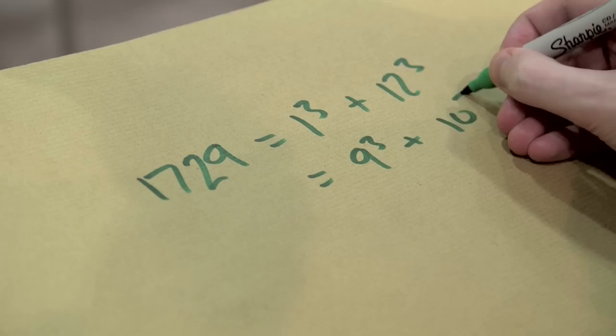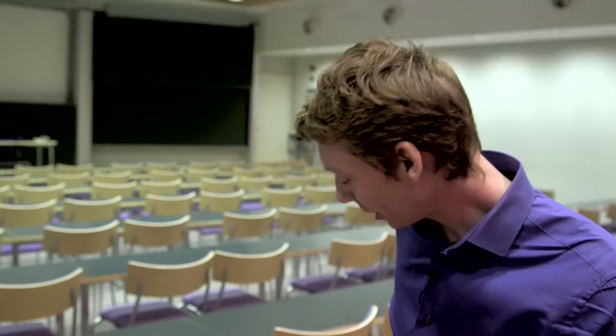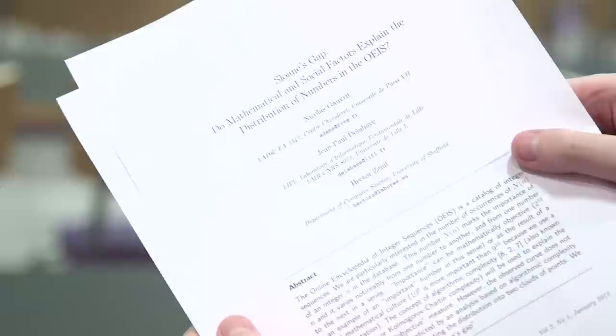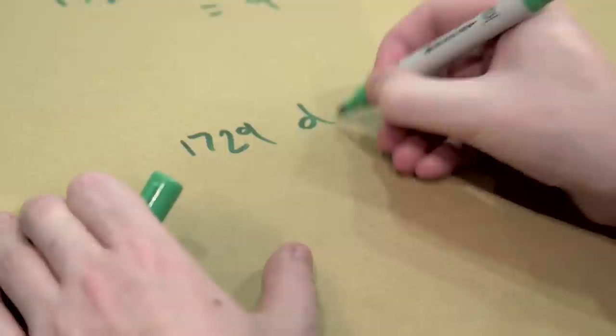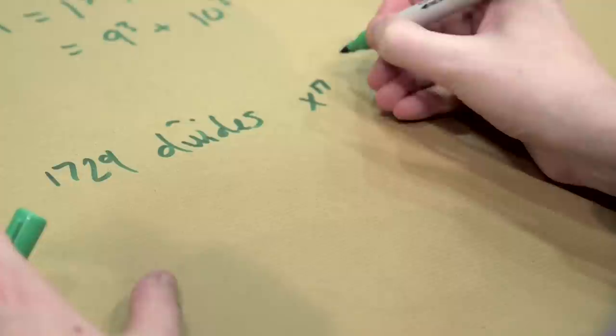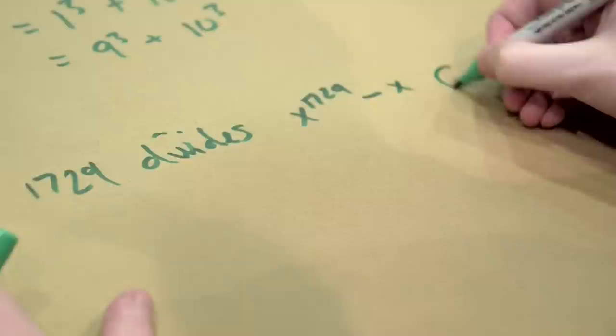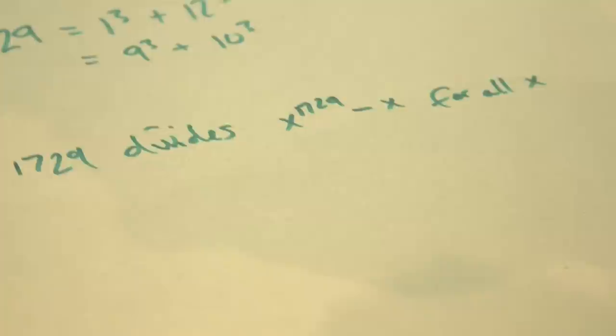There are other interesting things about 1729 — that's not the only interesting thing about it. It actually turns up in other sequences. This is the paper I'm going to refer to, and it gives 1729 as an example. 1729 is also the third Carmichael number, meaning 1729 divides x to the power 1729 minus x for all x — whatever value x is, it will divide that perfectly.